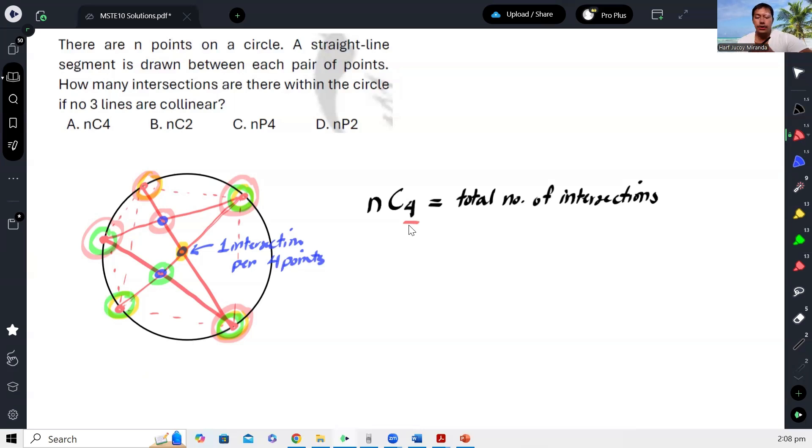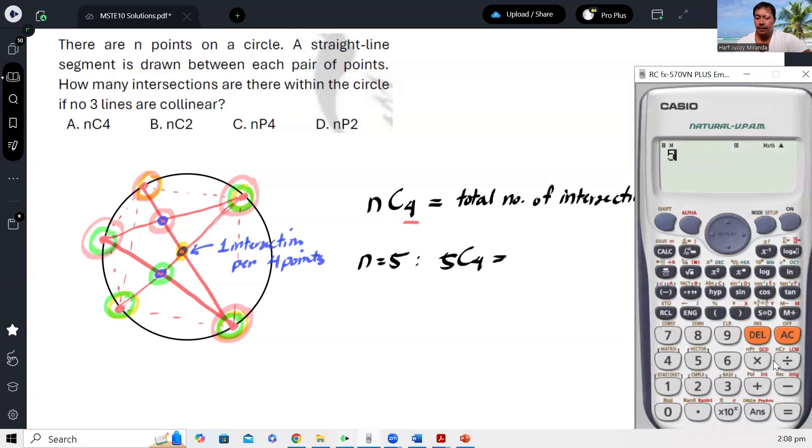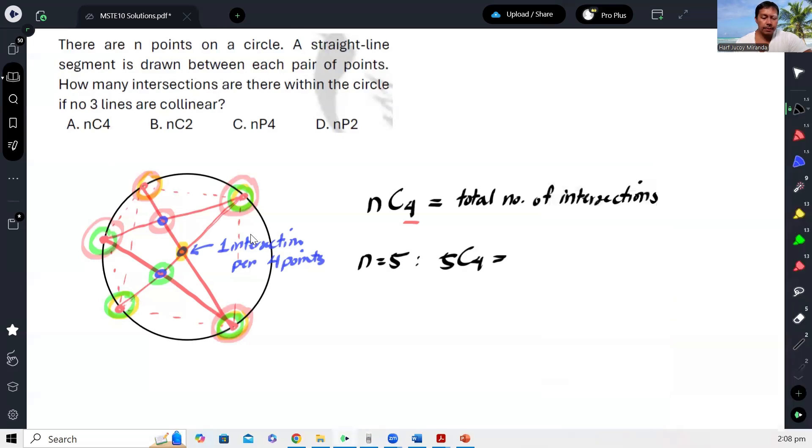Okay, so just to use this example as an experiment: halimbawa ang n ay 5, no? So tingnan lang natin. So that is 5 combination of 4, and if we will calculate that, that gives us 5 combination of 4, that gives us 5. Okay, yung 5 na yun would be...